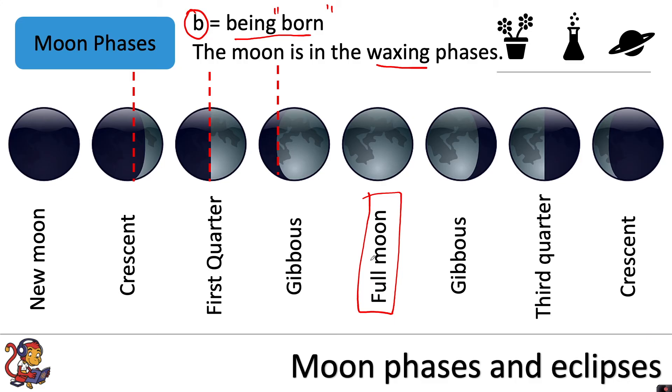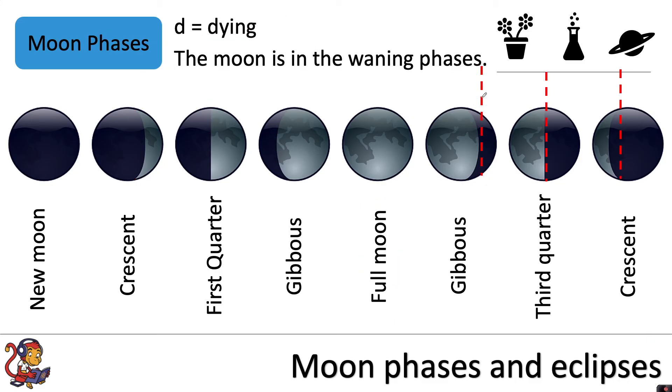And after the full Moon the other phases will look like the shape of a letter D. And you can think of that as the Moon dying. The Moon is in the waning phases which means you will see less and less of the Moon until you get the cycle back round to the new Moon again.